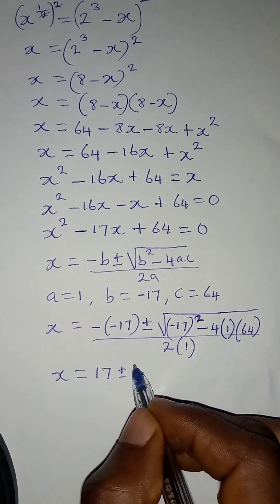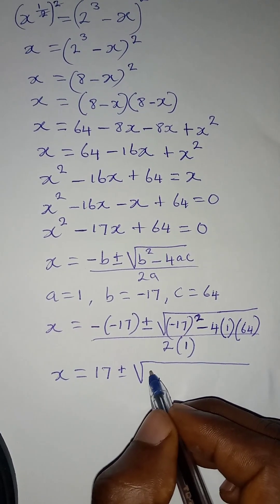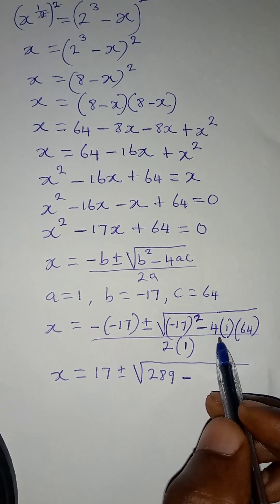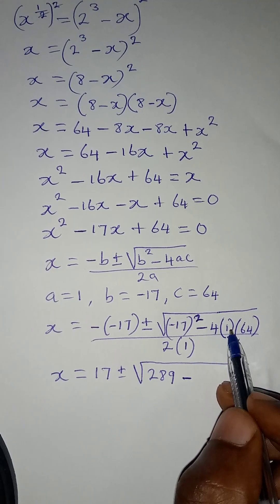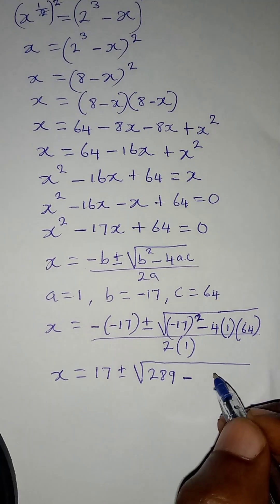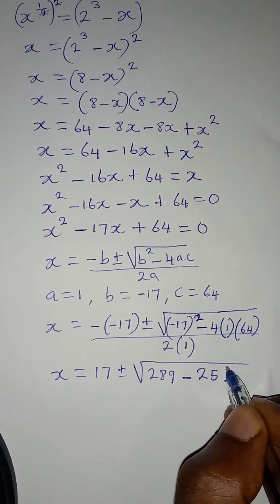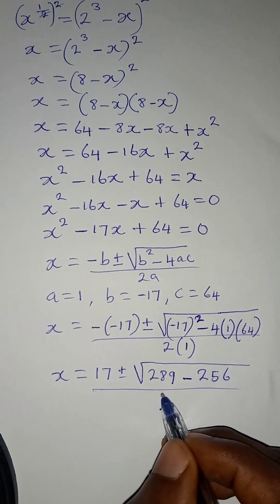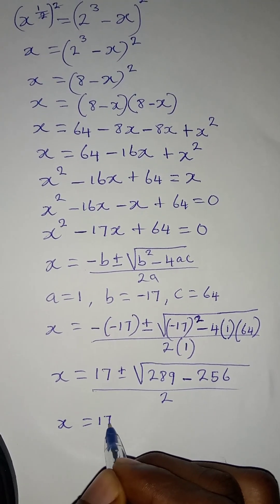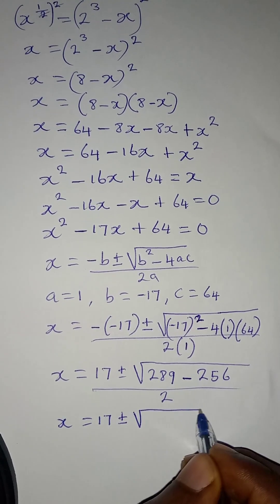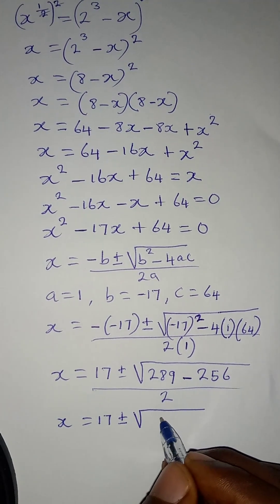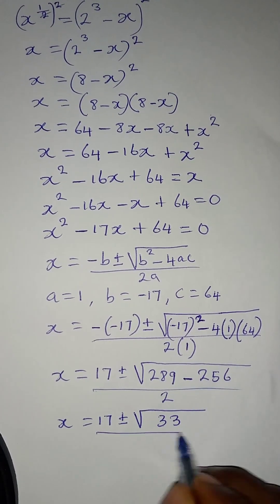Negative negative gives positive 17. Minus 17 squared gives 289, then minus 4 times 1 times 64 gives 256. So we have 289 minus 256, all over 2, which gives us 17 plus or minus the square root of 33, over 2.